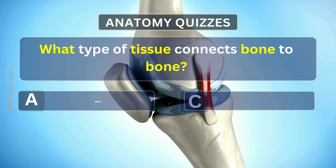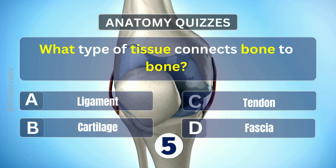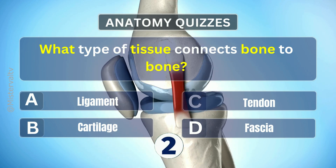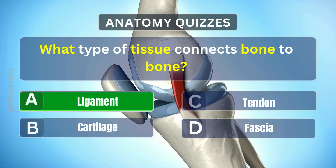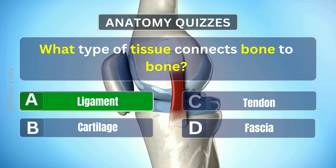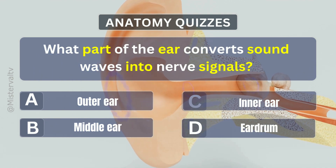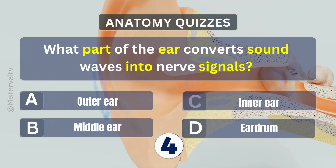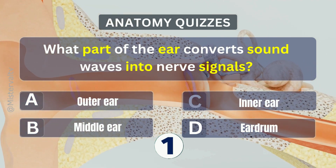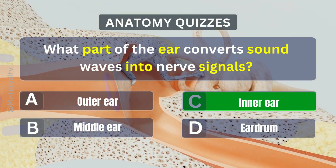What type of tissue connects bone to bone? Answer. A. Ligament. What part of the ear converts sound waves into nerve signals? Answer. C. Inner ear.